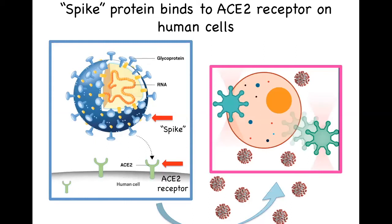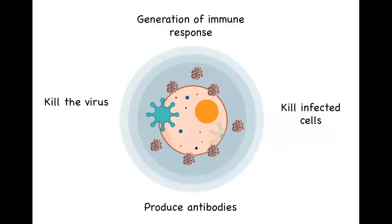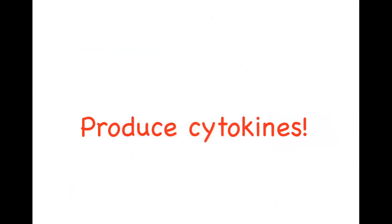So what happens when our immune cells encounter all these viral particles? They start generating an immune response, which will be characterized by many leukocytes trying to kill the virus or virally infected cells. There will also be production of antibodies that can neutralize the virus, as well as the production of many different cytokines.